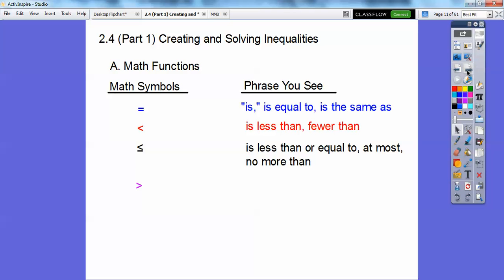Greater than or equal to, I'm sorry, greater than, it's just greater than or more than. And finally, greater than or equal to is greater than or equal to, at least or no less than. So if you see any of these phrases here, we're going to use these kind of symbols over here.